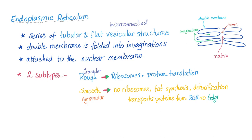Two subtypes: the granular or the rough endoplasmic reticulum — why granular? It has ribosomes, so it helps in protein translation. The smooth or agranular has no ribosomes. They aid in fat synthesis, detoxification, and transport protein from the rough endoplasmic reticulum to the Golgi.